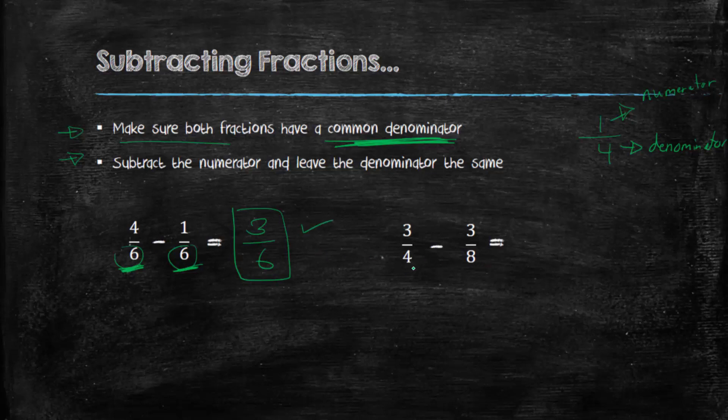In this case here, we look at it and we say, do these guys have the same denominator? No, they do not. So we have to make this fraction, well, we have to have both fractions have the same denominator. The easiest way is to make this fraction out of 8. Well, how do we do that?